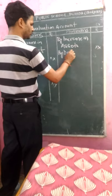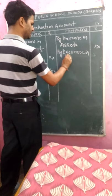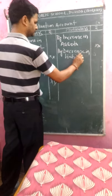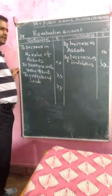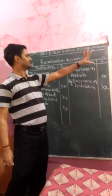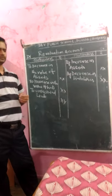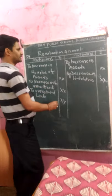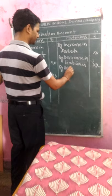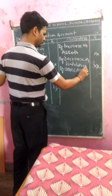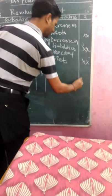The next item is decrease in liability. If the value of a liability has decreased, we write it in the Credit side, because decrease in liability is a gain or profit for the firm. Finally, unrecorded assets are also written in the Credit side. So there are three items on each side.